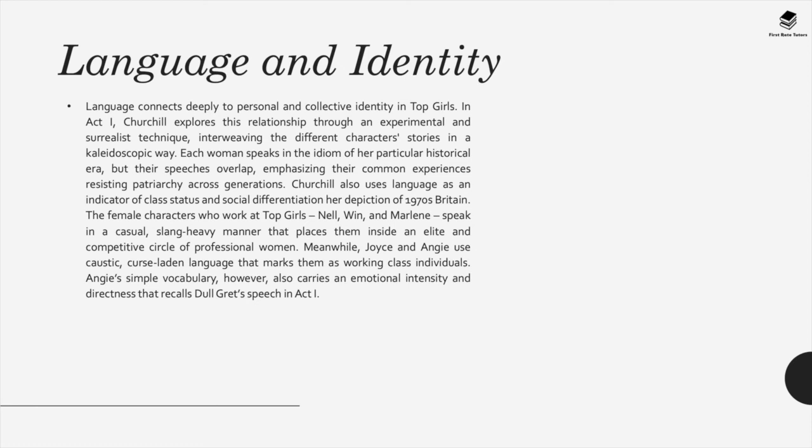Churchill also uses language as an indicator of class status and social differentiation in her depiction of 1970s Britain. The female characters who work at Top Girls — Nell, Wynne, and Marlene — speak in a casual, slang-heavy manner that places them inside an elite and competitive circle of professional women. Meanwhile, Joyce and Angie use caustic, curse-laden language that marks them as working-class individuals.